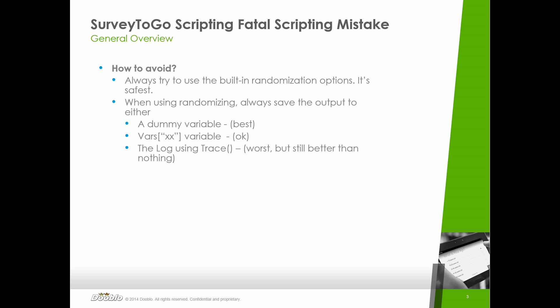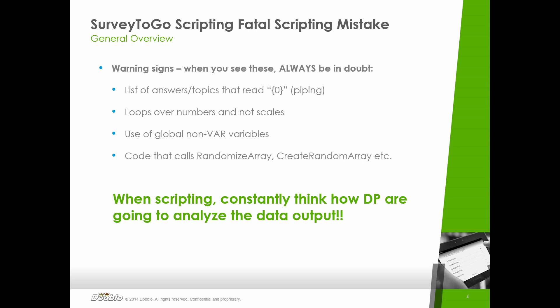This small solution makes all of the fieldwork worthwhile because now we know the order. I chose the dummy variable technique; I could have also used the vars variable to save the data — it would be harder for data processing to use, but at least the data would be saved somewhere. Or I could trace it out to the log file, though that's beyond the scope of this session. At least it would have been saved, which is better than not saving it at all.